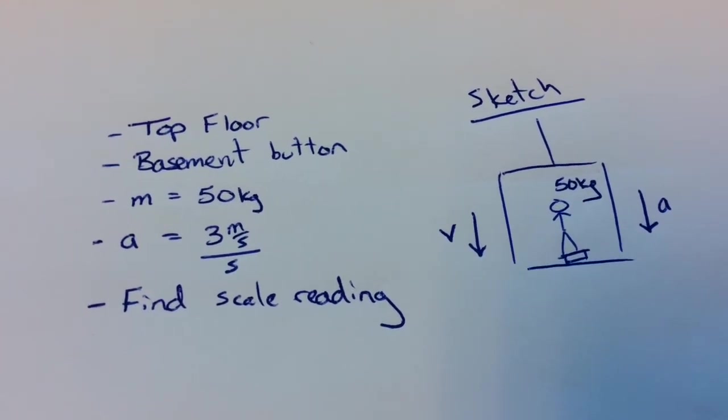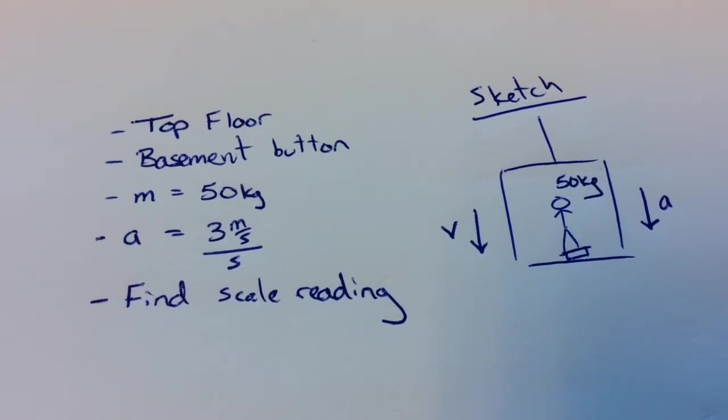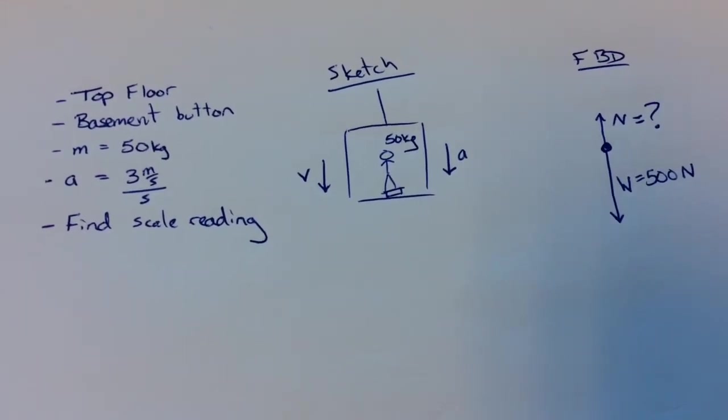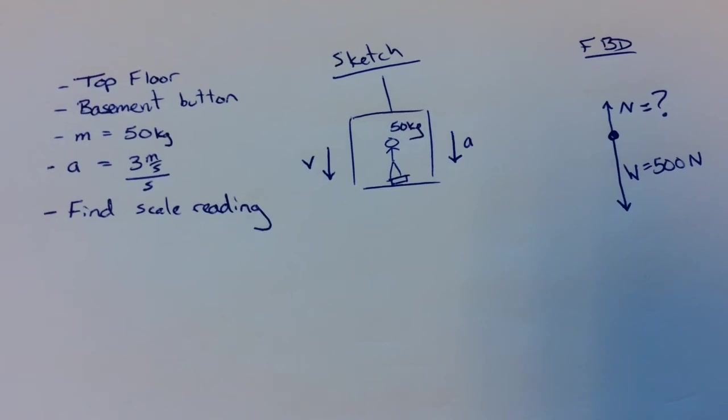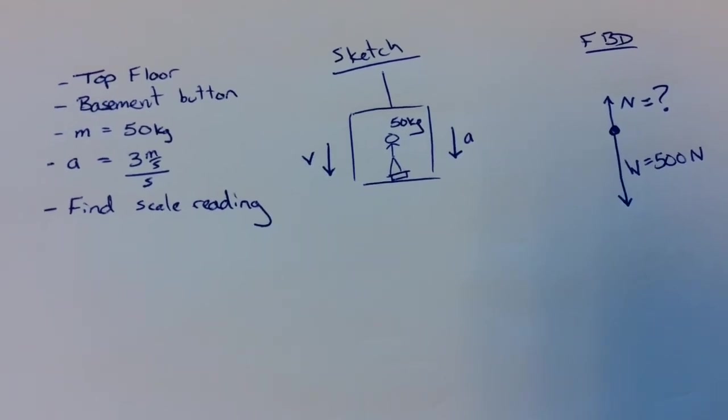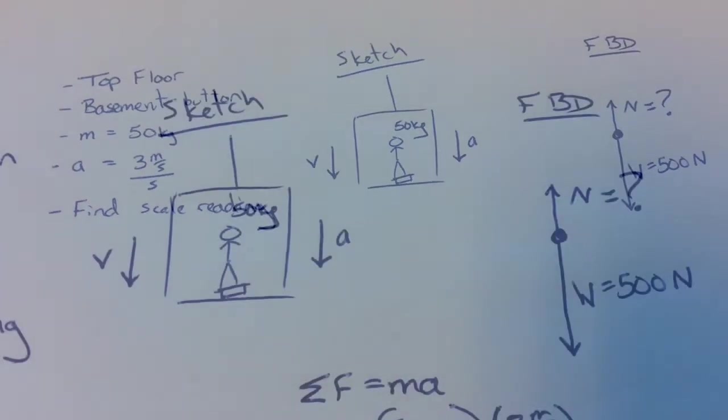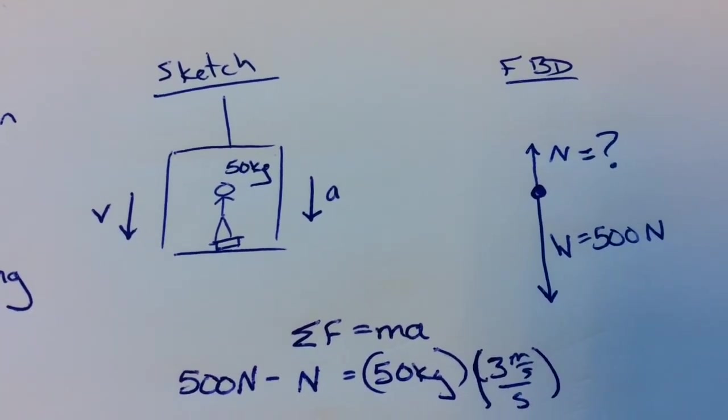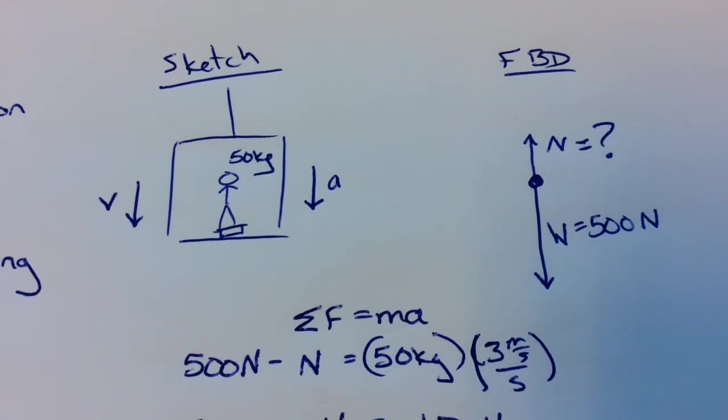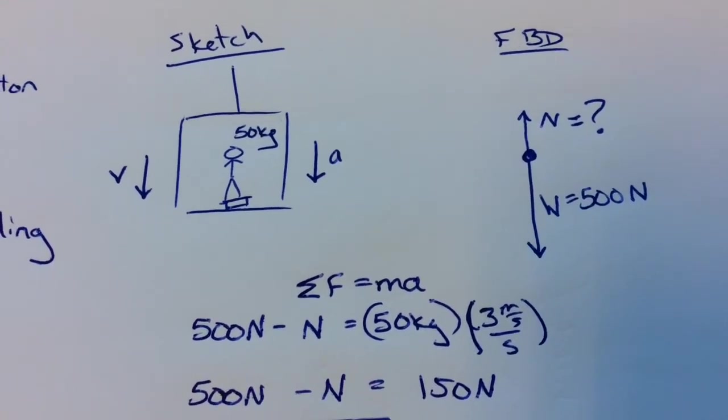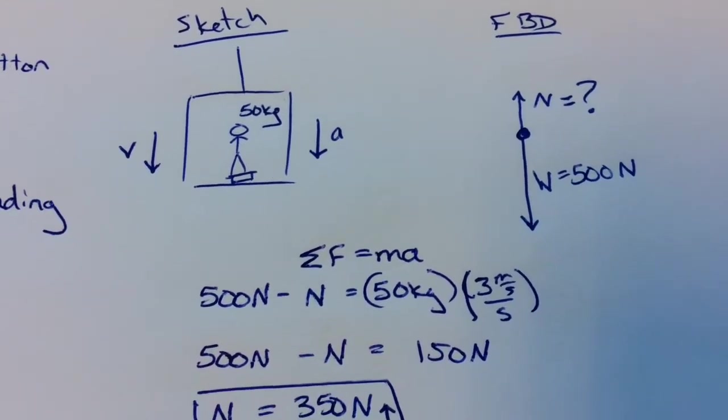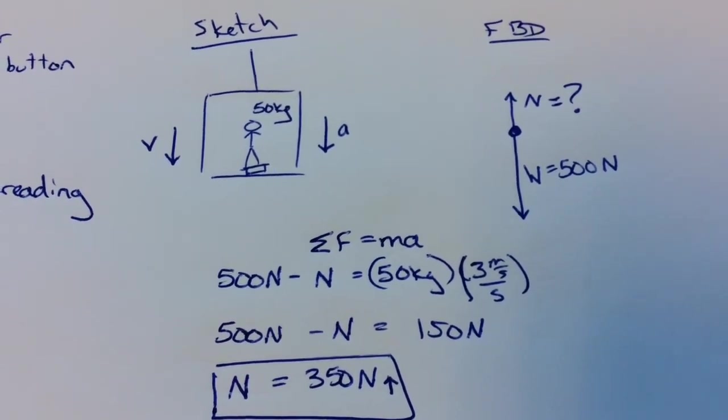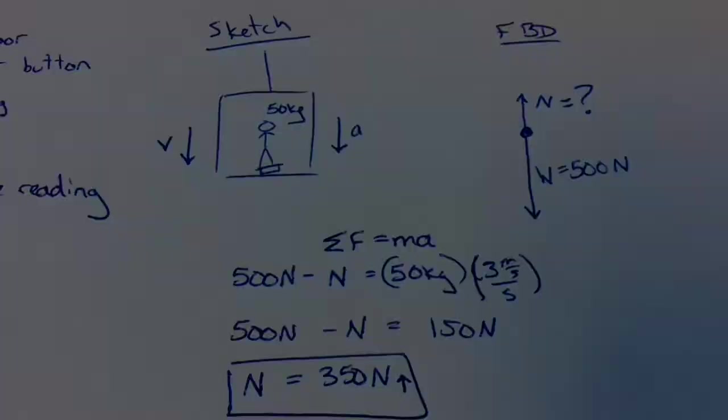Sketch first. The acceleration is down. That's the important thing. Then you know that the weight, which is 500 newtons, 50 kilograms is the mass, is larger than the normal force. So you know that that's a fact. Then you apply Newton's second law. Net force is mass times acceleration. 500 newtons minus the normal force, which you don't know, is equal to 50 kilograms times the known 3 meters per second every second. Solve that problem. Get a normal force of 350 newtons. Smaller than the weight, as expected.